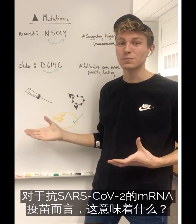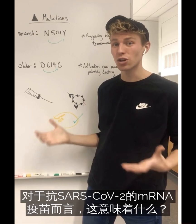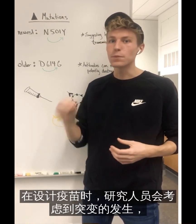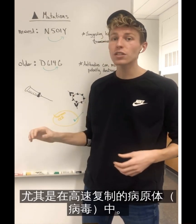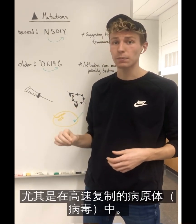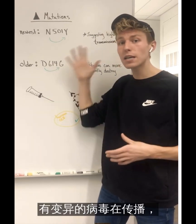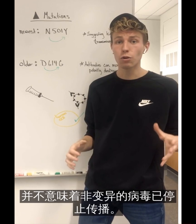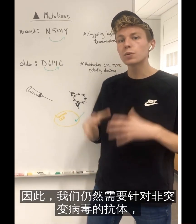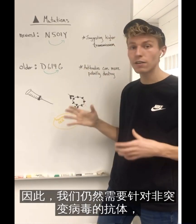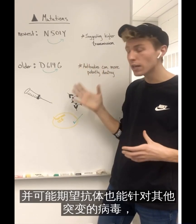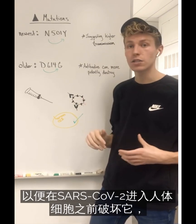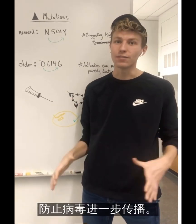So what does this mean in terms of the mRNA vaccine against SARS-CoV-2? When vaccines are designed, researchers take into account that mutations will occur, especially in pathogens that are highly replicating, such as viruses. Just because there are mutated forms of the virus circulating doesn't mean that the non-mutated form has stopped circulating. So we still need to get antibodies against the non-mutated form and potentially these mutated forms in order to destroy SARS-CoV-2 before it can enter our human cells and prevent the further spread of this virus.